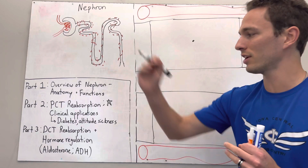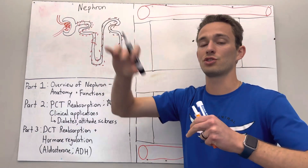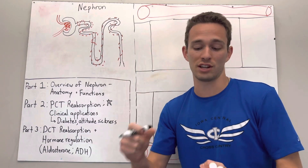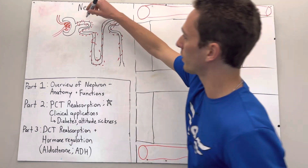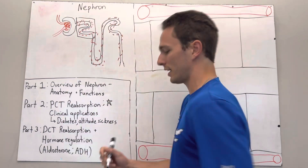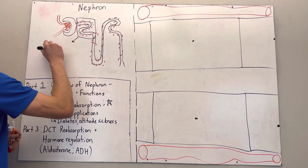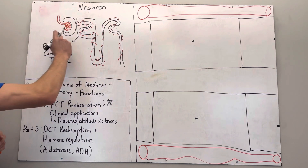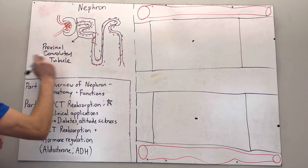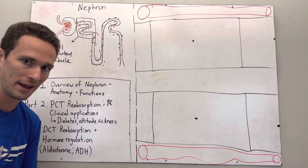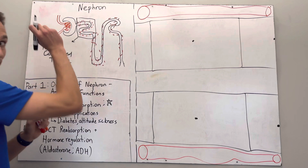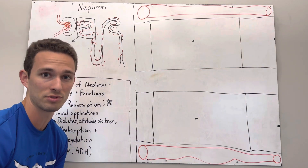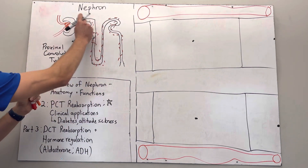The nephron, which I covered in the last video, is the functional unit of the kidney. It's going to reabsorb different solutes and fluids back into the bloodstream to keep our bloodstream constant with things like sodium, glucose, and amino acids. Today we're focusing on the first part of the nephron, called the proximal convoluted tubule. It's called proximal because it's closest to Bowman's capsule — where blood is filtered into the tubule — convoluted because it's twisted, and tubule because it's just a tube.